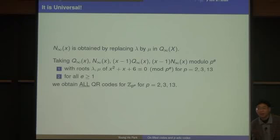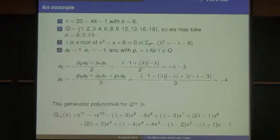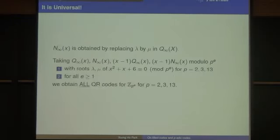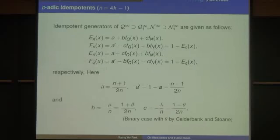The reason for 2, 3, and 13 is that p must be a quadratic residue modulo n, and 5 and 7 are not quadratic residues modulo 23.